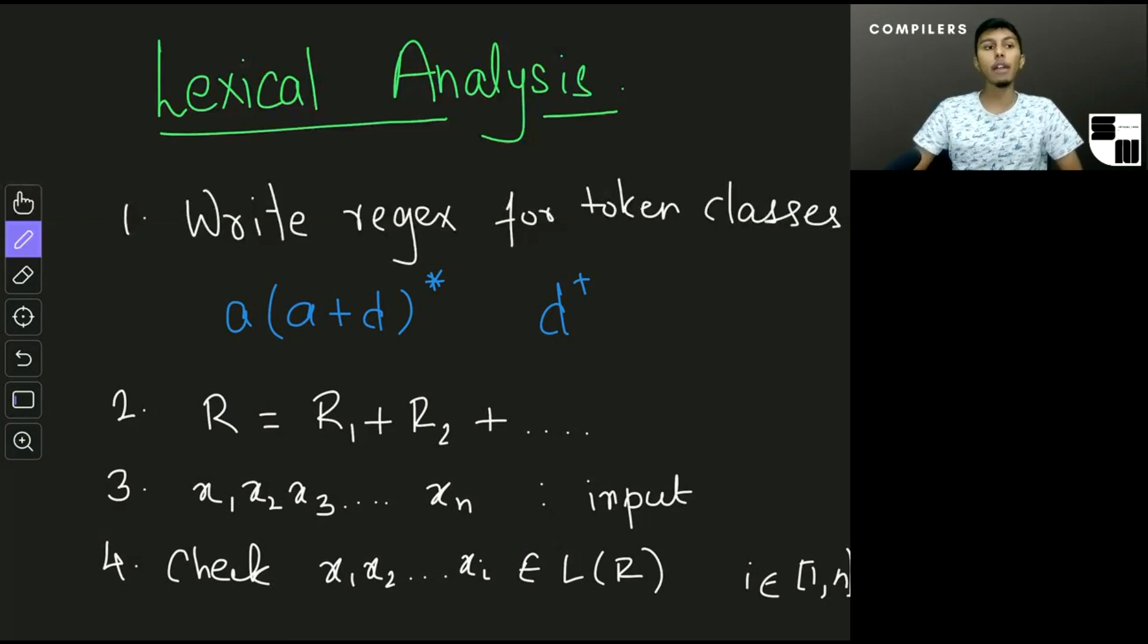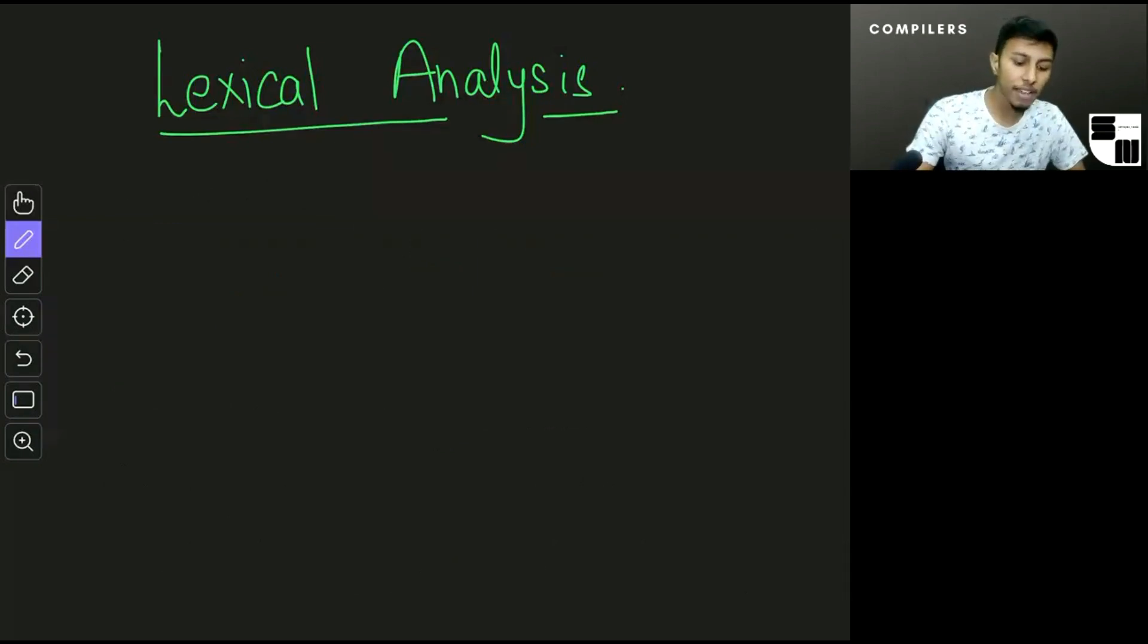Once we check that this does belong to the language represented by the regular expression given by R, the next step is to identify which token class this string actually belongs to. So that's step 5. Of course, if 4 was a success, if for success, then check which one it belongs to.